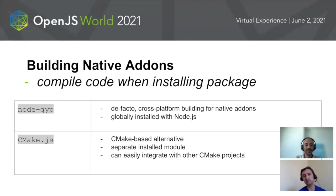Another alternative is CMake.js. If you have used C++ build systems in the past, you may be familiar with CMake. This one allows you to easily integrate with other C++ projects that are also CMake-based, and will easily allow you to incorporate the dependency trees that you need.